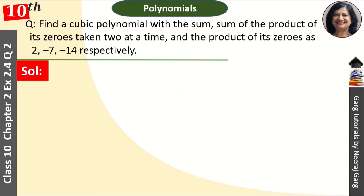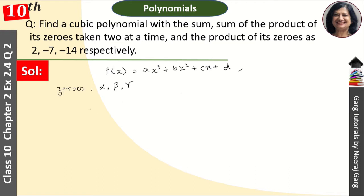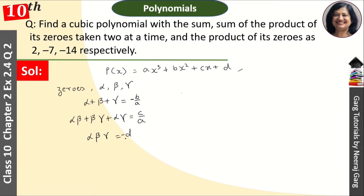First of all, I will note that the cubic polynomial basic form is p(x) = ax³ + bx² + cx + d. And if its zeros are alpha, beta, gamma, then the formula is: alpha + beta + gamma = minus b upon a; alpha·beta + beta·gamma + alpha·gamma = c upon a; and alpha·beta·gamma = minus d upon a.